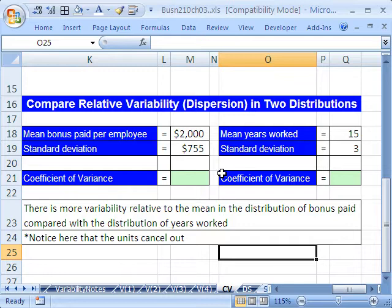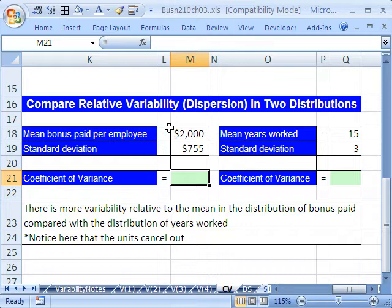There's three good reasons to use this coefficient of variance. If you have means that are different, like we do here, or standard deviations that are very different. Or you have units that are different, right? So this is mean bonus paid per employee. And this is mean years worked. So you really can't compare those at all. Three years compared to $755 standard deviation. That doesn't make any sense. But coefficient of variance will completely give us our results.